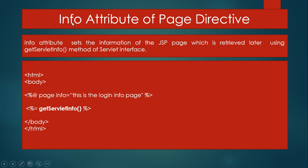Next we discuss the info attribute of the page directive. The info attribute sets the information of the JSP page, which is retrieved later using the getServletInfo() method of the servlet interface. In this example, the info attribute is given the value 'this is login info page'. This is basically used to display some information for readability. Using an expression JSP tag, we call the getServletInfo() method to print this information on the screen.